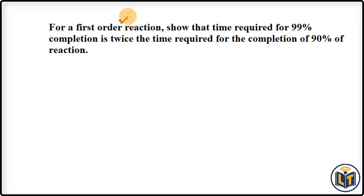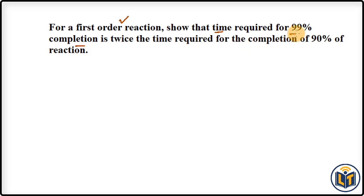This is the problem: for a first-order reaction, the time required for 99% completion is twice the time required for 90% completion. One reaction is getting completed by 99% and another by 90%, and we have to find the relation between the times of both reactions.